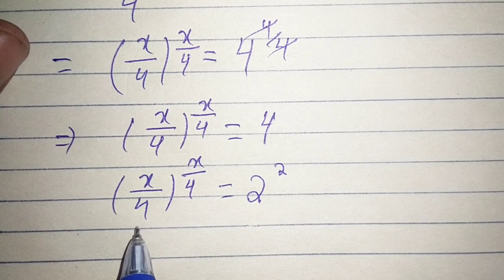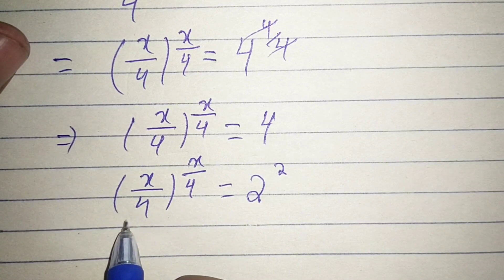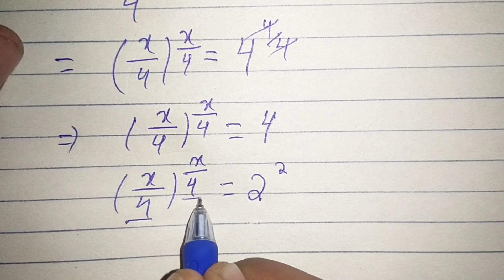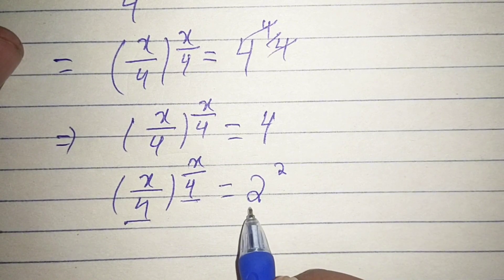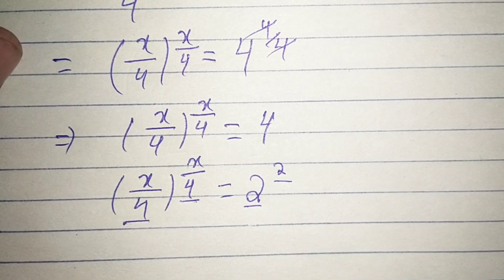Here we can see that on the left side the base and exponent are the same, and on the right side the base and exponent are also the same.